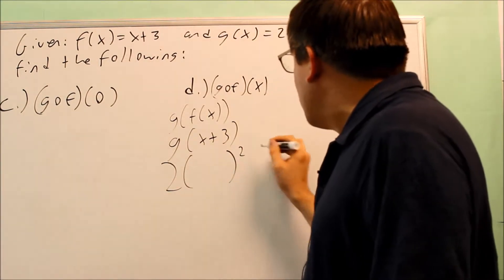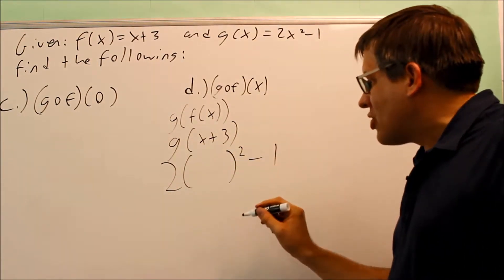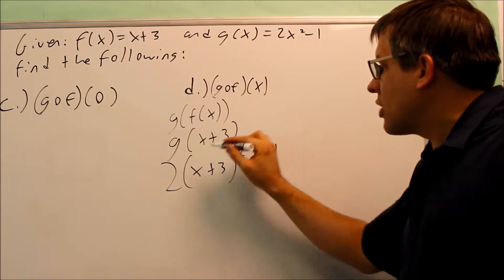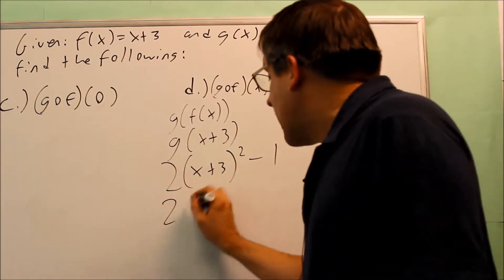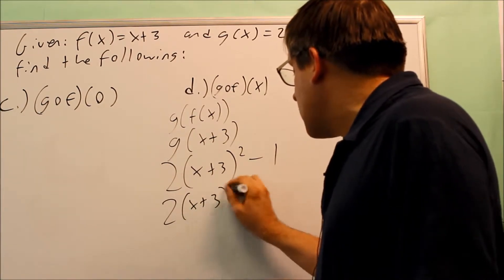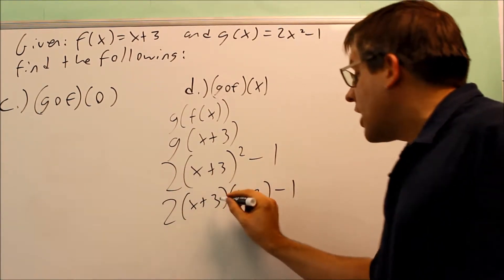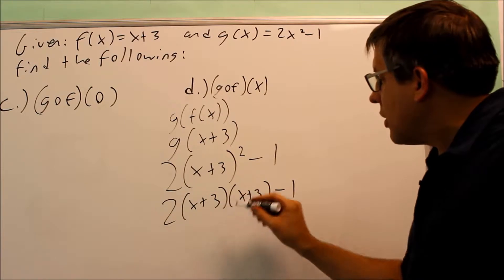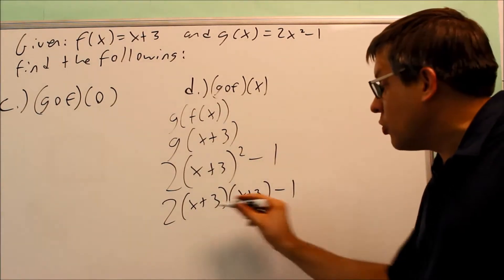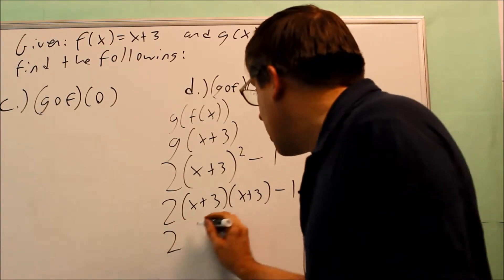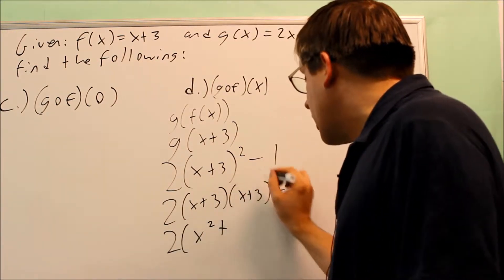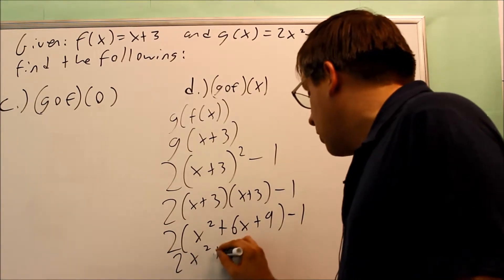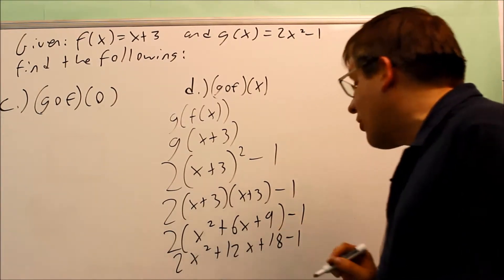This is saying I've got to put x plus 3 into here in place of x. Here's what it looks like: I have 2 times a space squared and then minus 1. In the space I'm going to put in x plus 3. To expand that, remember you're really multiplying x plus 3 times x plus 3 — don't just distribute the square into each term because you won't get the middle term. You have to multiply both out. So you get x squared plus 3x plus 3x plus 9, which is x squared plus 6x plus 9. Then multiplying out by 2, I get 2x squared plus 12x plus 18, and then I have a minus 1.